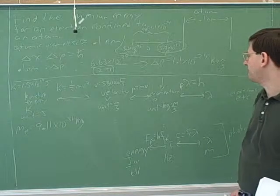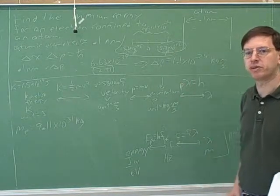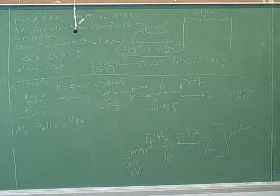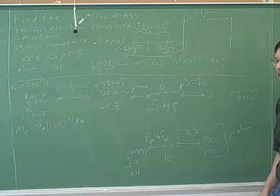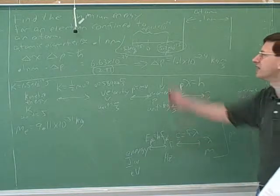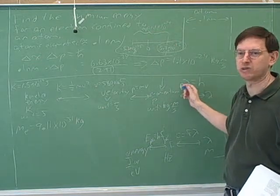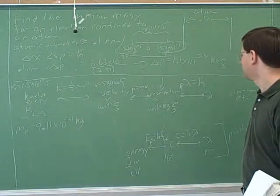Something else you could do is figure out the de Broglie wavelength. How can we find the de Broglie wavelength of this electron? By using Planck's constant and the momentum. Which momentum would we plug in? The 5.1 — right, not the 1.1. Again, the most common mistake would be to plug in delta p, when what we really need is p.